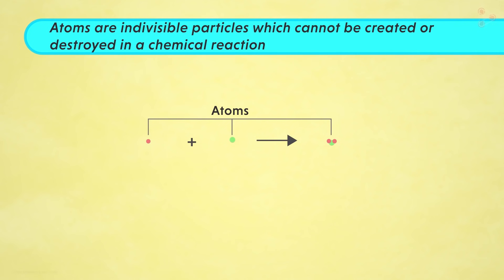The second postulate was that atoms are indivisible particles which cannot be created or destroyed in a chemical reaction. Now what do we mean by this? It means that atoms are like the fundamental units. Dividing them further is not possible. Also in a chemical reaction, atoms may combine together to form new units.